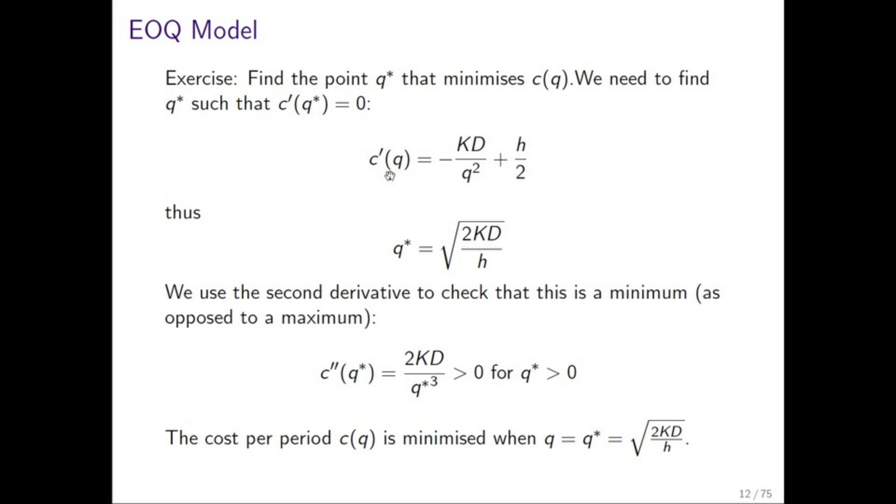We differentiate the cost with respect to Q, obtain this expression, we then set that to be zero, and we obtain the value for Q star. Obviously, we'll have plus or minus this algebraically, but Q star is a positive quantity, so we're interested in the positive value. We can do a very quick test of the second derivative to check that that is indeed a minimum. But that is the economic order quantity.